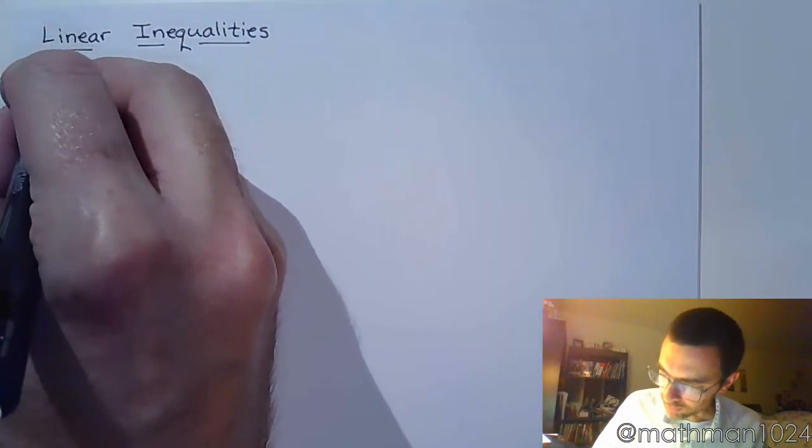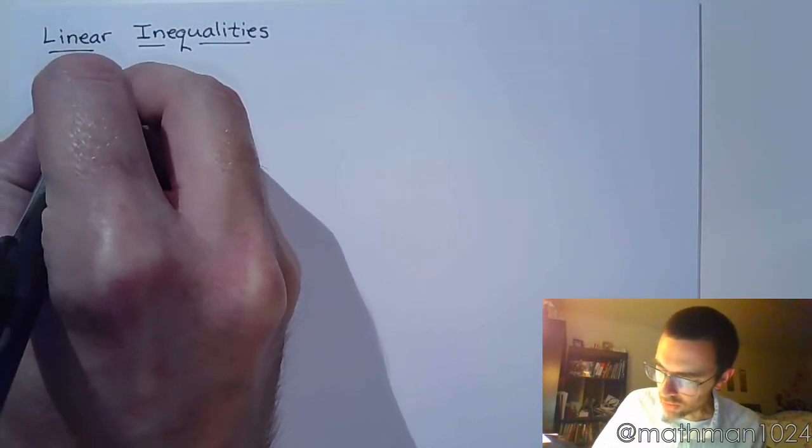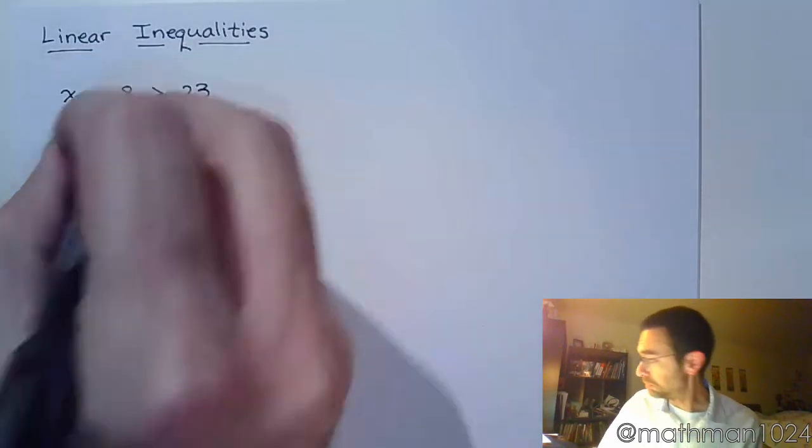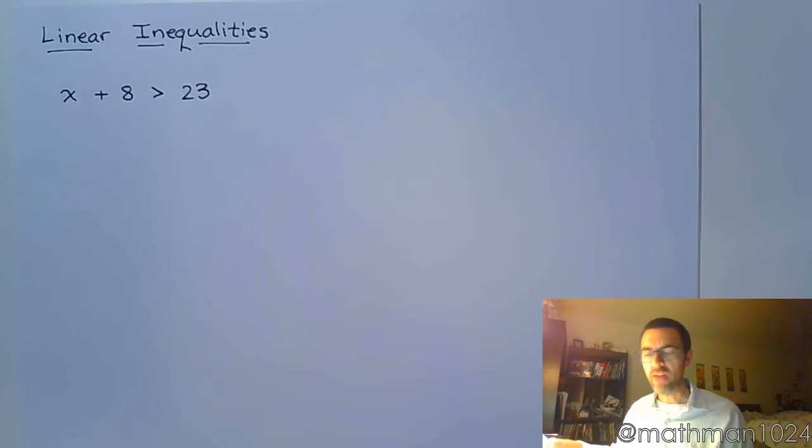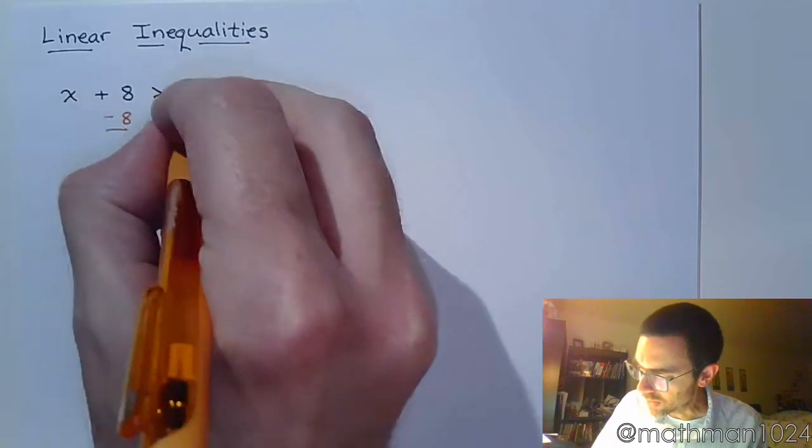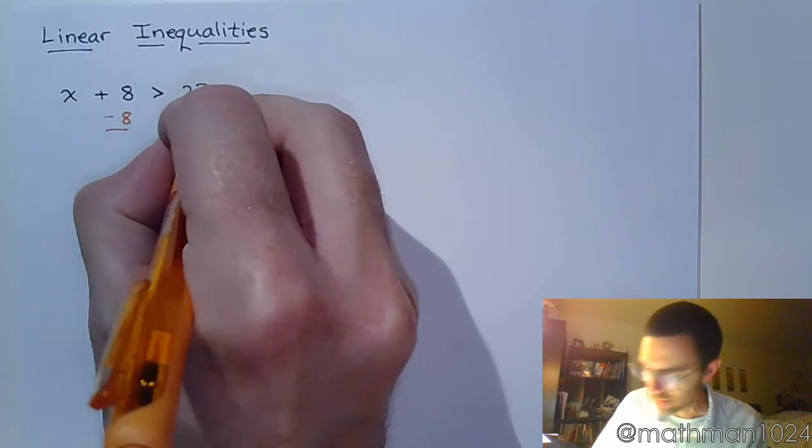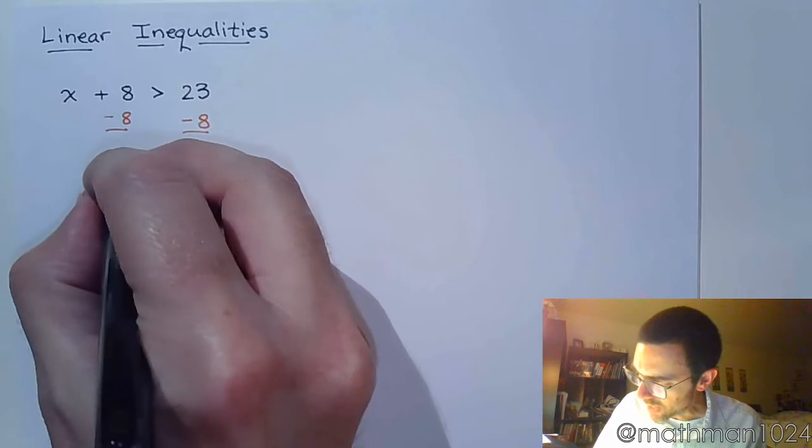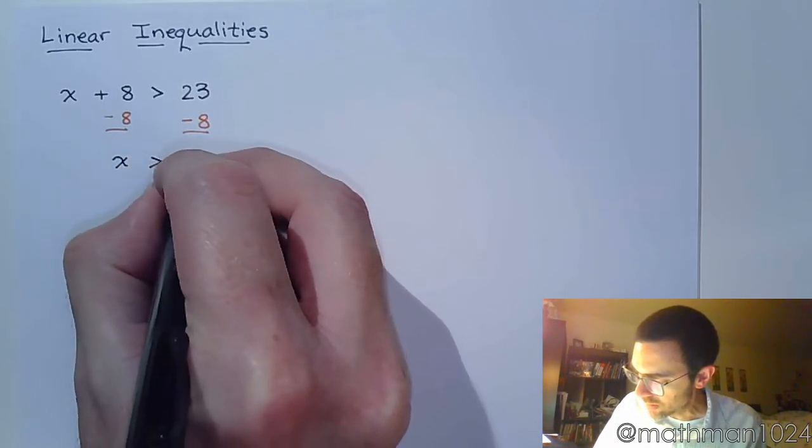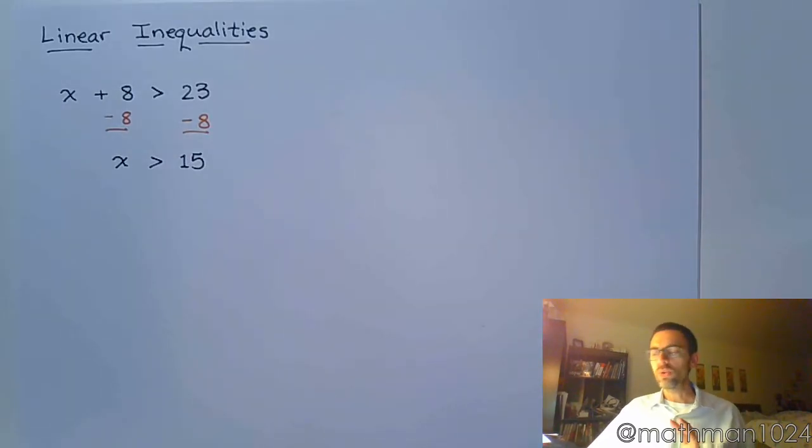For example, let's look at these. If we need to solve x plus 8 is greater than 23, getting x by itself shouldn't be that big of a deal. We just need to subtract 8 on both sides like this. So we have x is greater than 15. Here we just subtracted 8 on both sides so the inequality order is still going to be true. It's not going to flip around.